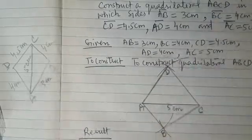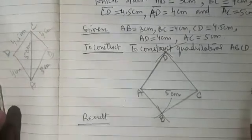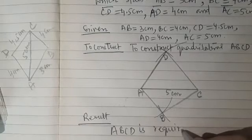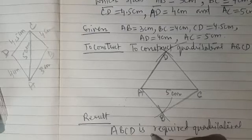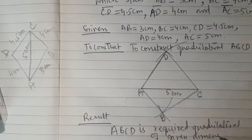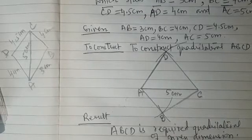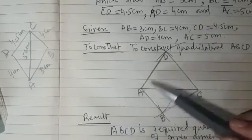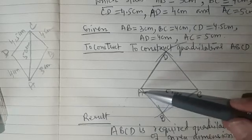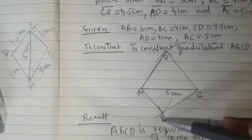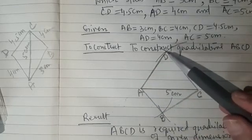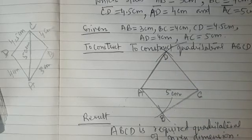Now write the result: ABCD is the required quadrilateral of the given dimensions. To summarize the steps: first we drew diagonal AC; using dimensions of sides AD and CD, we got point D; using dimensions of sides AB and CB, we got point B; then we joined AB, BC, CD, and DA using the ruler. I hope it is clear to you — now practice this and try one question from the exercise.